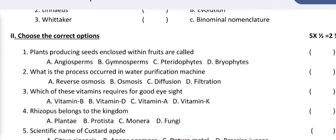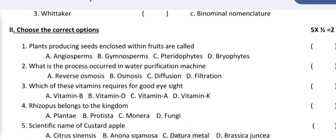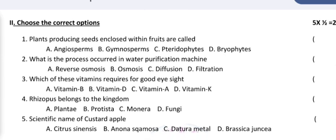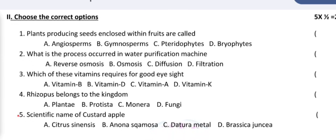Choose the correct options. Number one: plants producing seeds enclosed within fruits are called. Four options are given, the correct one you can mark in the bracket.